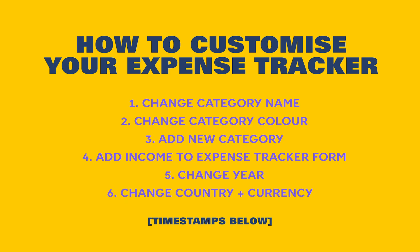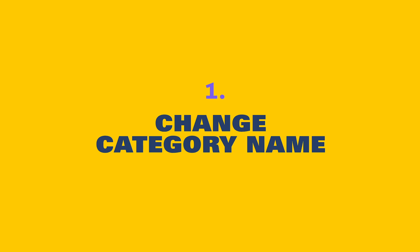Hey everyone, it's Deb. I'm going to teach you how to customize your expense tracker today. I had a lot of requests for these specific tutorials over the last few days, so I'll be covering these six things: how to change the name of a category, changing the color of a category, adding a category, adding income to the expense tracker form, updating the year, and changing the country and currency. Timestamps will be below. Let's get started.